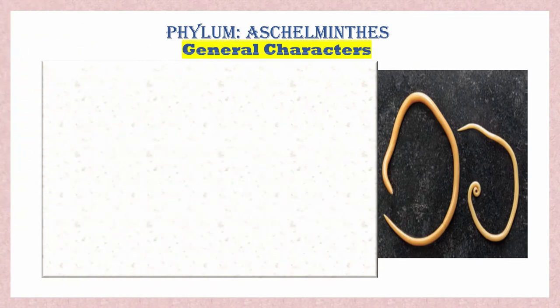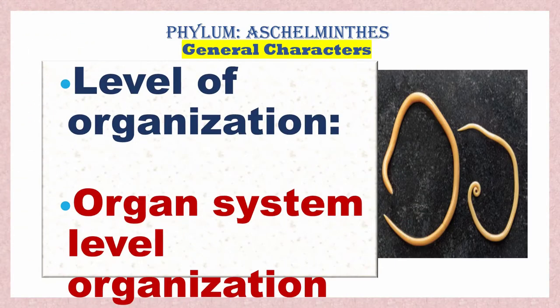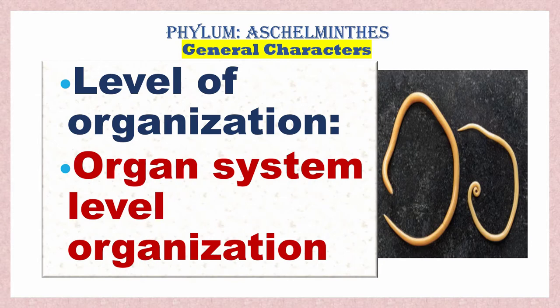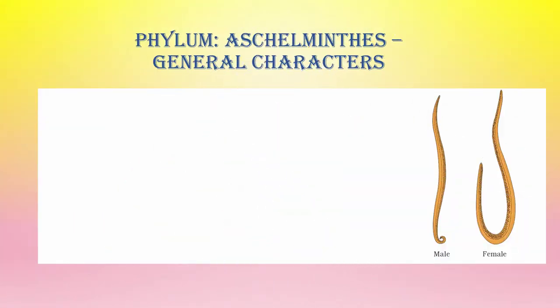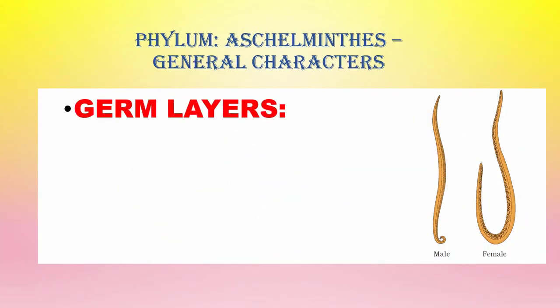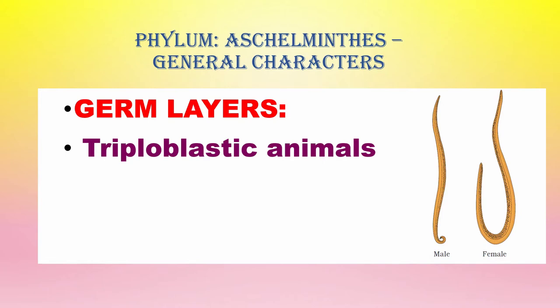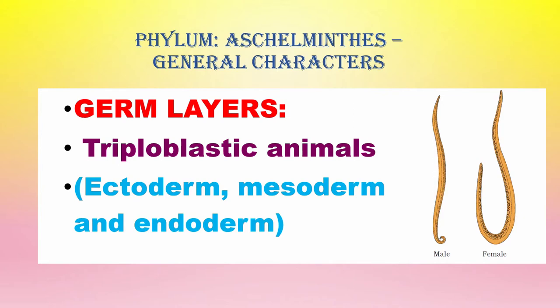The level of organization is organ system level. From Platyhelminthes onwards, organ system level of organization starts, so Aschelminthes also has organ system level organization with well-developed systems like the digestive system and respiratory system. The germ layers are three — ectoderm, mesoderm, and endoderm are present in the embryo — so Aschelminthes are termed triploblastic animals.